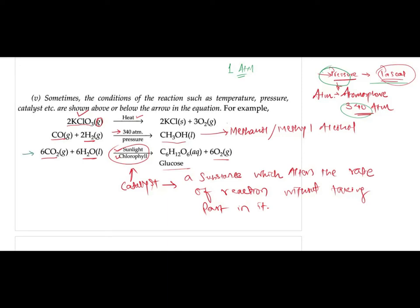The next reaction where the condition is shown is photosynthesis, where sunlight and chlorophyll are required. Sunlight and chlorophyll are not products or reactants, but their presence is essential — they act as catalysts. In the presence of sunlight and chlorophyll, carbon dioxide and water give glucose and oxygen. A catalyst is a substance which alters the rate of reaction without taking part in it.